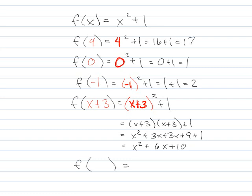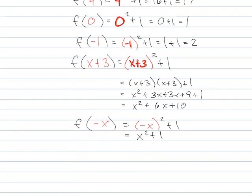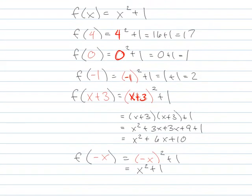Try f of negative x. Again, nothing to get too concerned about. Everywhere you see an x in the original function, put a negative x. Negative x squared is x squared plus 1. You actually get the same thing back. Not a problem. But it's kind of fun. Actually, before I get too excited, I want to go back to this for a second.